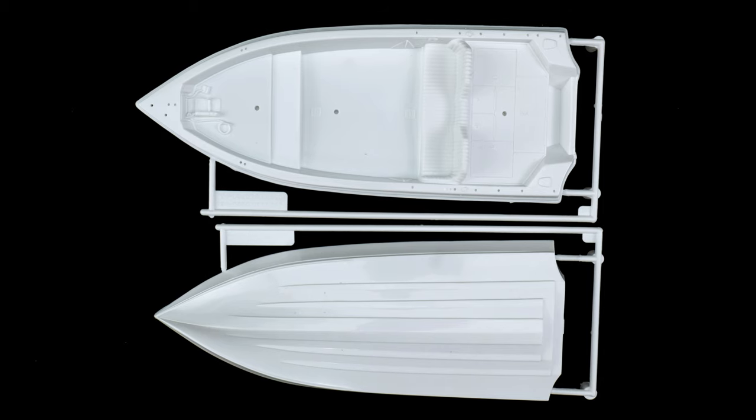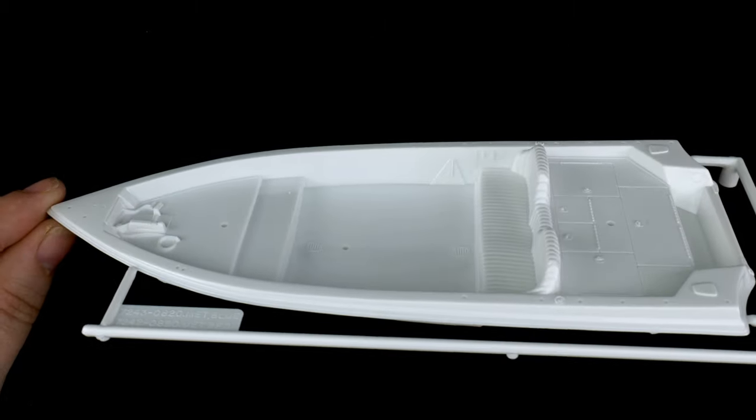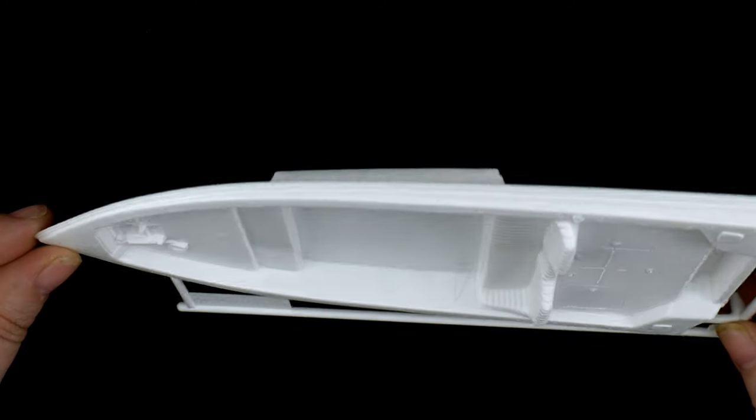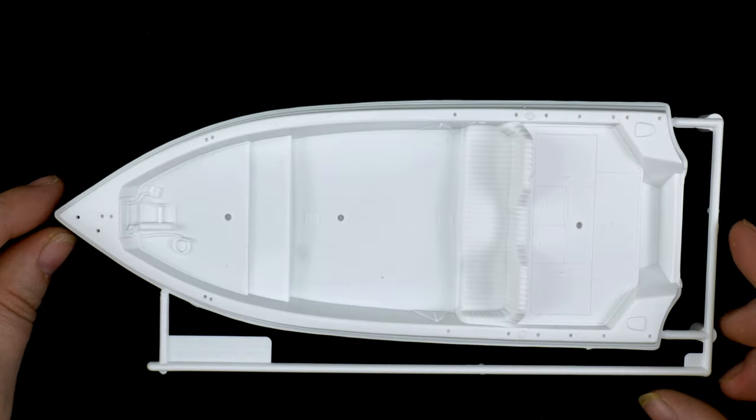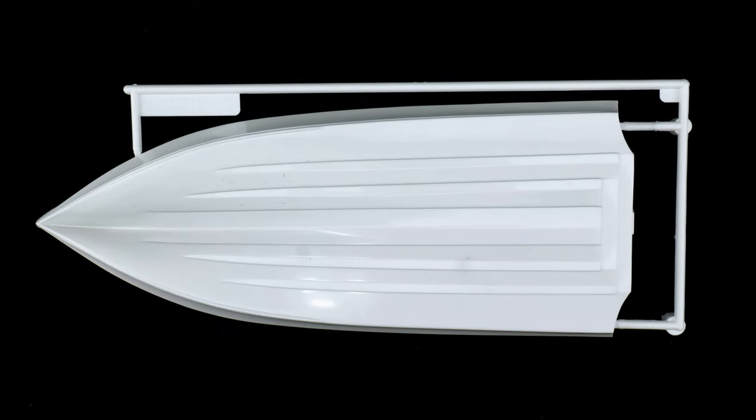Now we're going to take a look at the bass boat, which is done in two pieces, top and bottom. Start with the top. A fair amount of detail on top. And we'll take a look at the bottom part side, or the hull.